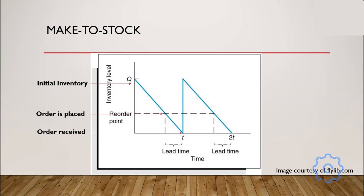This model assumes constant demand. In the real world, we rarely have constant demand unless you have contracted orders, so your demand line will probably be much different than shown here. But this is a good model to show how inventory levels generally work in relation to reorder points. We start with an initial inventory, work down to a reorder point, continually burn off product, and then the ordered inventory arrives and we go back up to Q.